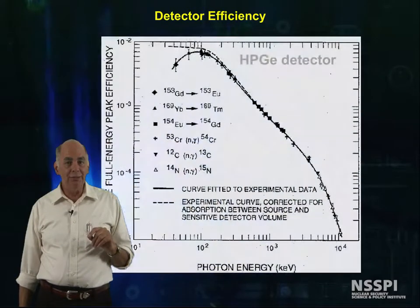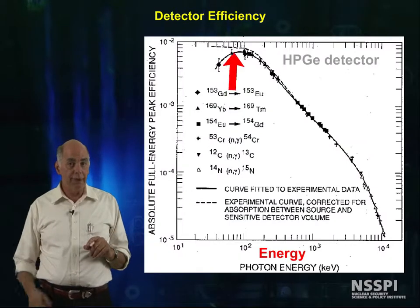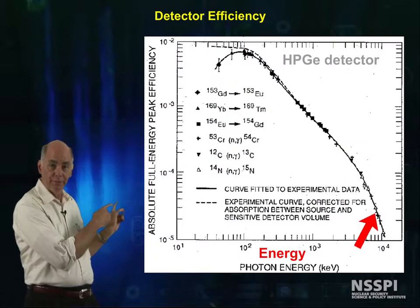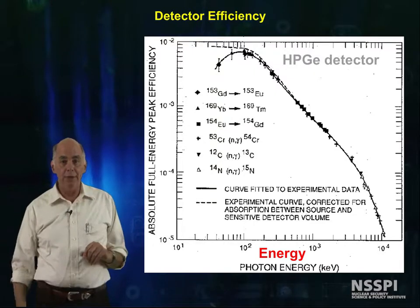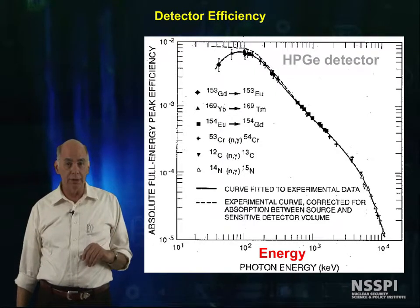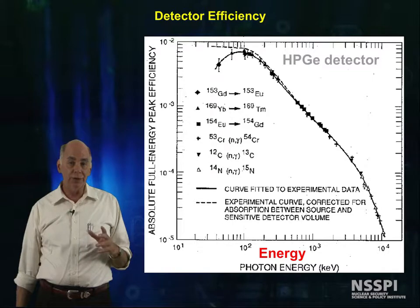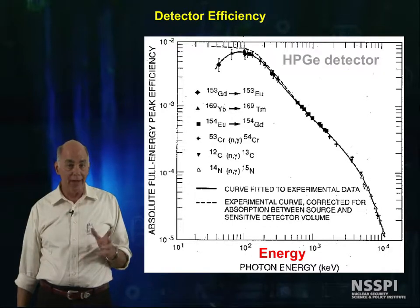Notice that the absolute efficiency is a function of particle energy. The graph here is for a high purity germanium gamma ray detector, but the idea is much the same for all detectors, with minor exceptions.